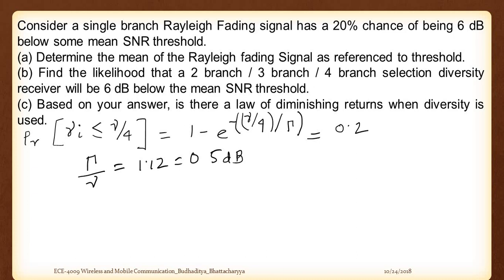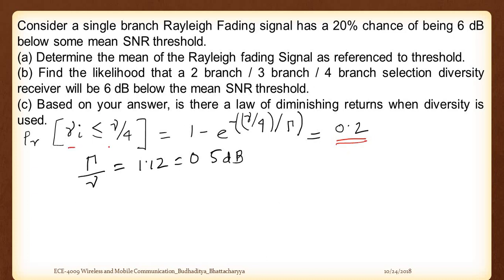We need to determine the mean of the Rayleigh fading signal as reference to threshold. The probability given to us is the probability of failure, because the question states 20% chance of being 6 dB below some mean SNR - meaning the instantaneous SNR is less than some threshold. Since the threshold was given as a dB difference, we changed 6 dB to linear scale, which came to 0.25 or 1/4. This was the generic equation: 1 minus e to the power minus x, whole to the power m.